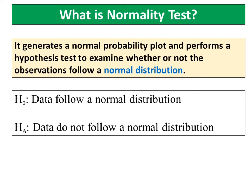For the normality test, the hypotheses are: null hypothesis is data follow a normal distribution while alternative hypothesis is data do not follow a normal distribution.